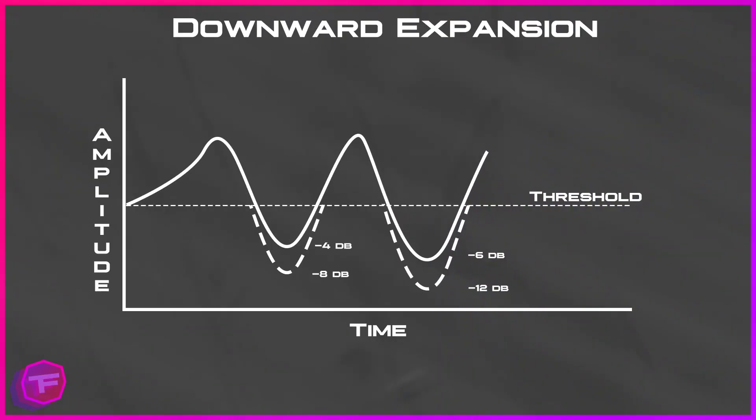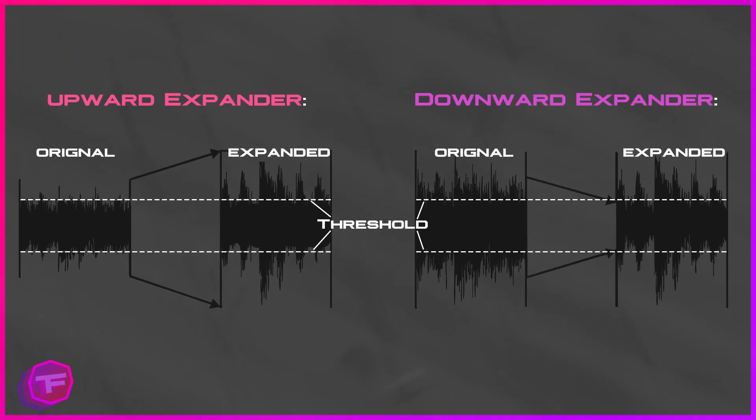Looking at a graph example — on the left we have amplitude and on the bottom we have time, similar to what you'd see in Audacity. A threshold is set where the dotted line is, and the expander ratio shown is 2 to 1. Once that audio level surpasses the threshold by negative 4 decibels, it will be expanded to negative 8 decibels. Similarly, negative 6 decibels gets expanded to negative 12 decibels.